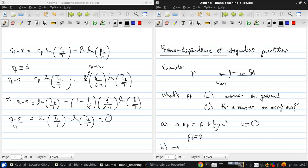Whereas for B, Pt equals P plus one-half rho C squared, where C equals C infinity.